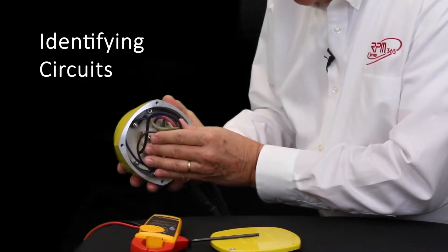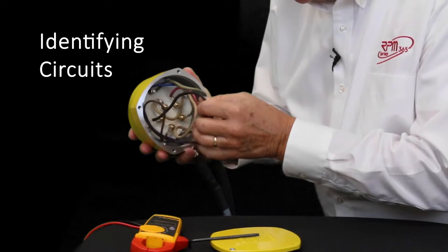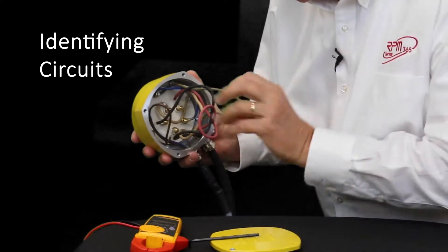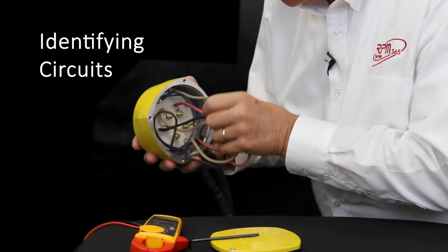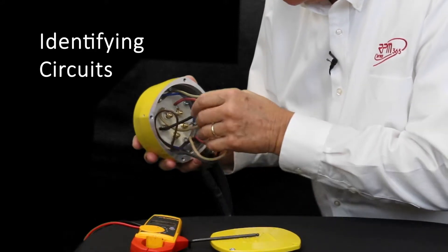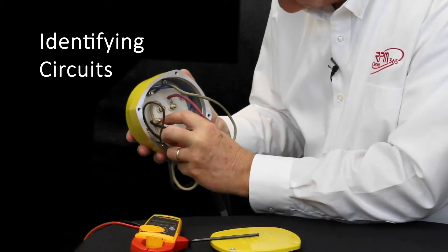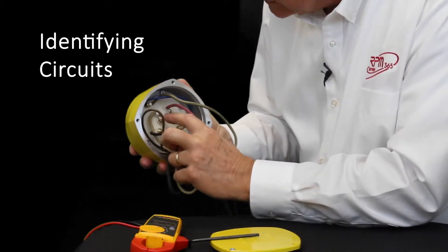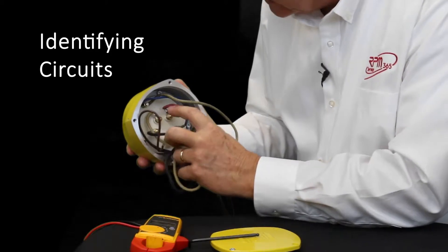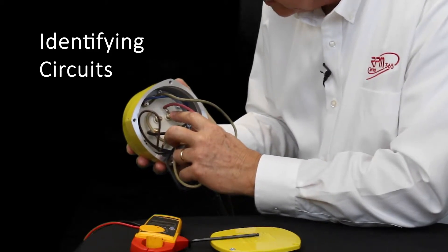Now that we've removed the cover, we can look more closely at the configuration of the terminal board. Notice that the three phases of power are connected as follows. Phase one is connected to terminal U. Phase two is connected to terminal V. And phase three is connected to terminal W.